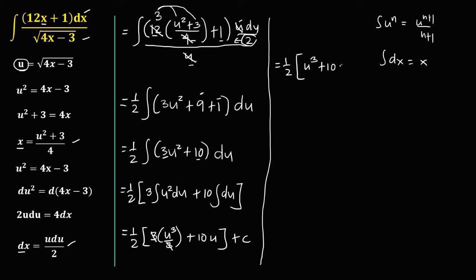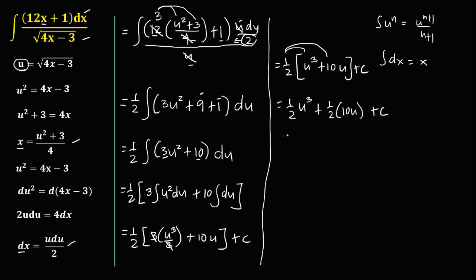Then distribute this 1 half. So that's 1 half u to the power 3, plus 1 half times 10u, then plus c. Or we have 1 half u cubed plus 5u, then plus c.